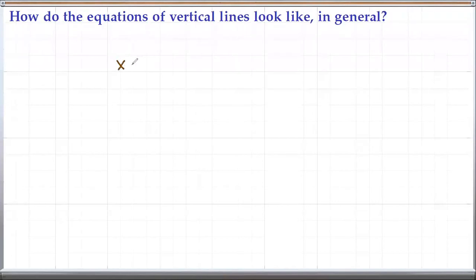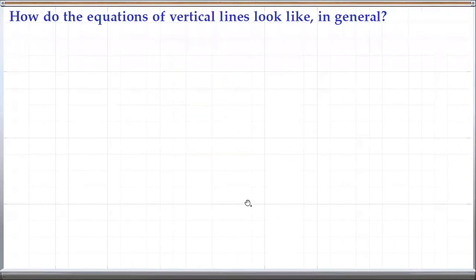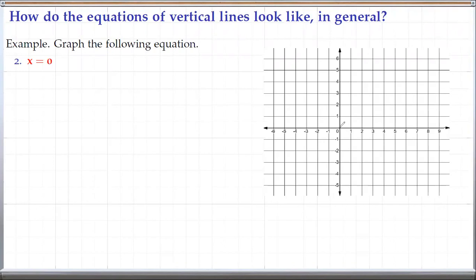Based on this example, we can see that a vertical line has an equation of the form x equals a constant. For example, x equals 5, x equals negative 6, x equals 100 — all these are vertical lines. These values decide where you are drawing the vertical line. For instance, x equals negative 3 is a vertical line at x equals negative 3. And x equals 0 is a vertical line going through x equals 0, which is simply the y-axis.